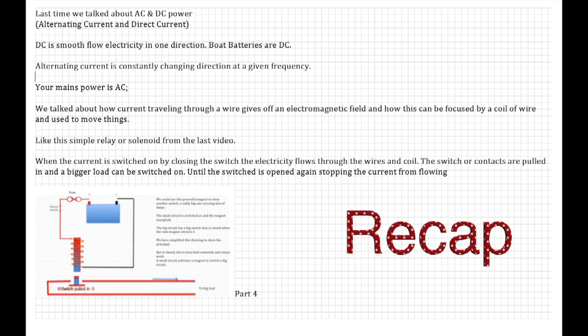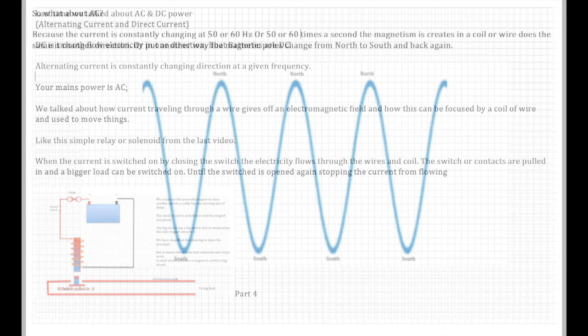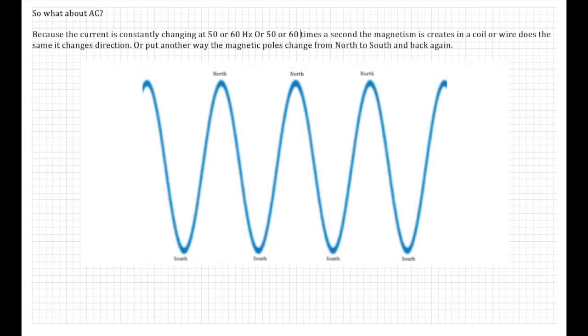Now remember, DC is a smooth flow of electricity in one direction. Boat batteries are DC. Alternating current is constantly changing direction at a given frequency. Mains power is AC at 50 or 60 Hertz. You also remember we talked about how current traveling through a wire gives off an electromagnetic field and how this can be focused in a coil of wire and used to move things. When the current is switched on by closing the switch, the electricity flows through the wires and coil. The switch or contacts are pulled in and a bigger load can be switched on until the switch is opened again, stopping the current from flowing. So that's the quick recap on what we learned in the last video. Let's move on again.